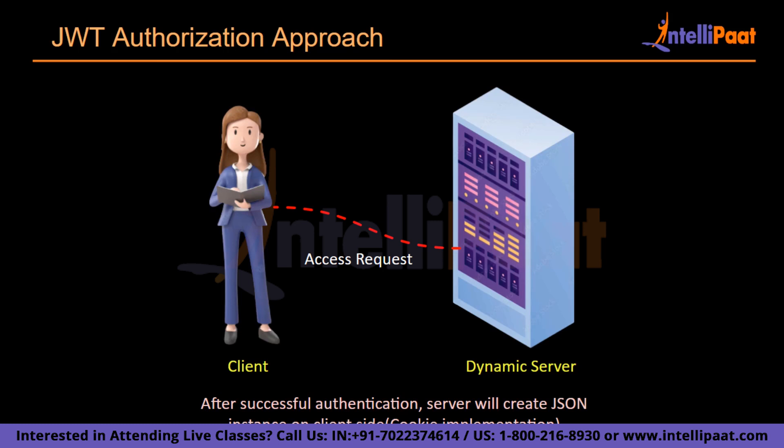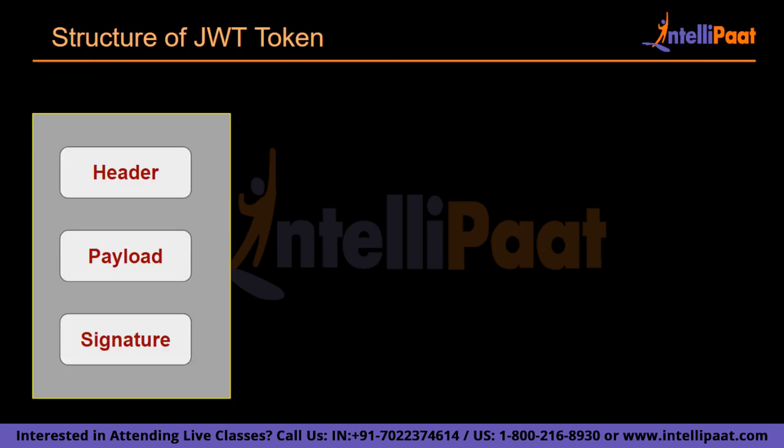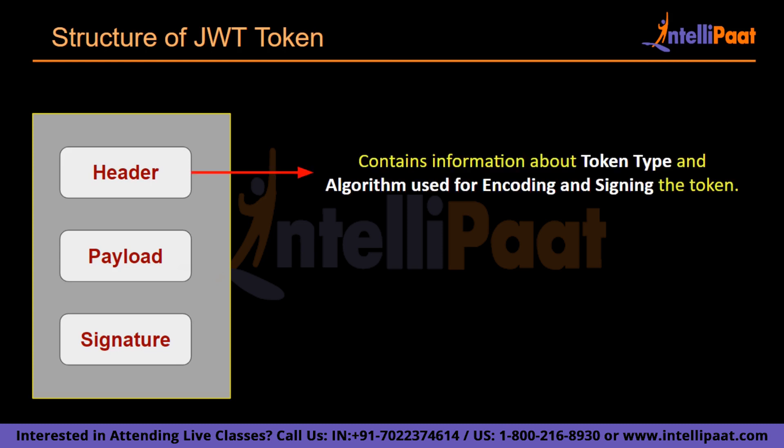The JWT token consists of three different parts. The first part is the header, which contains information about the token type — which will be JWT — and the algorithm used for encoding and signing the token. These algorithms can be SHA-256, HS-256, RSA, RS-256, and HMAC.